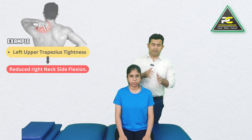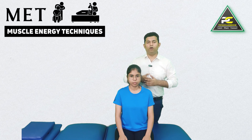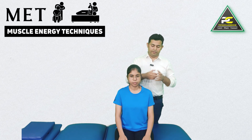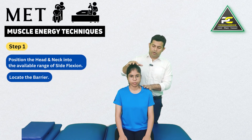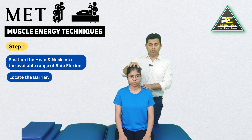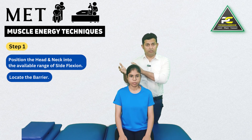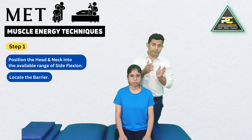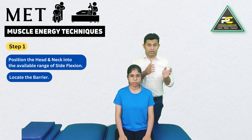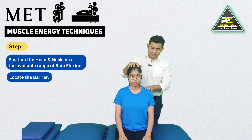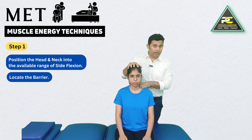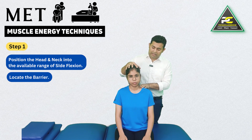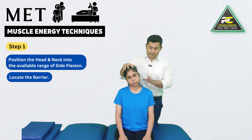The first step is to position the head and neck into its available range of motion at the level of the first perceived barrier of tissue resistance. The therapist places one hand over the bulk of the left upper trapezius and then very slowly starts taking the head and neck toward right side flexion.